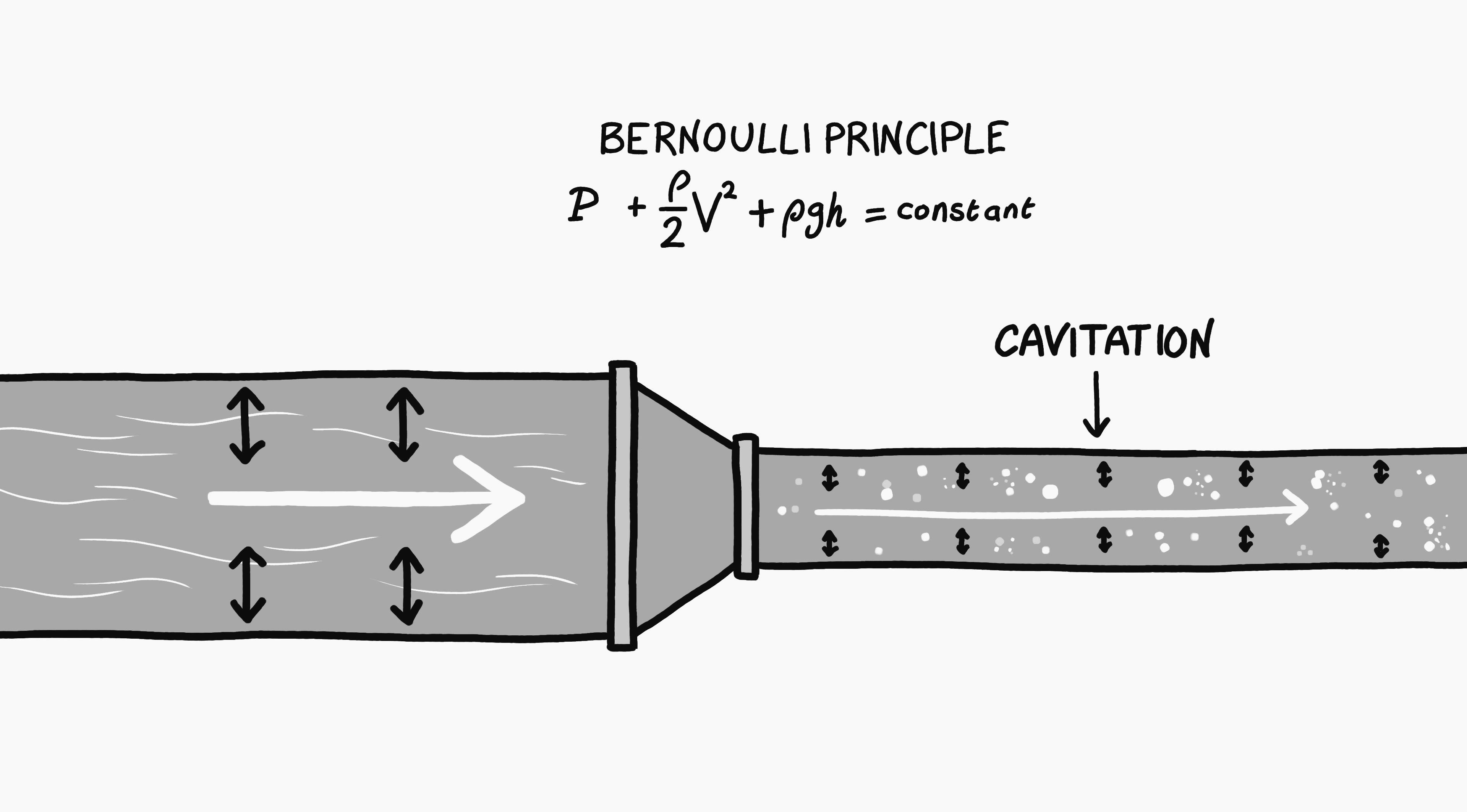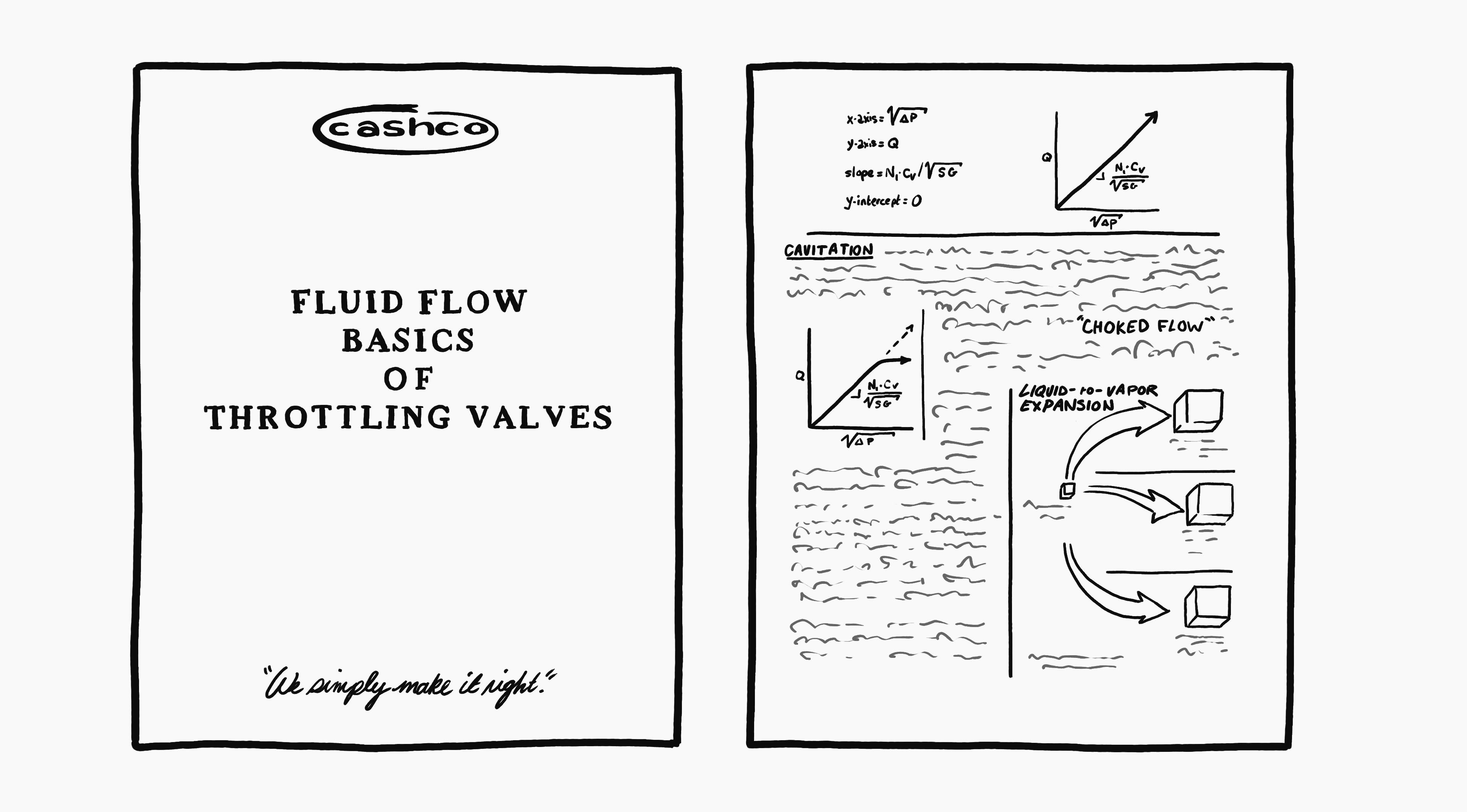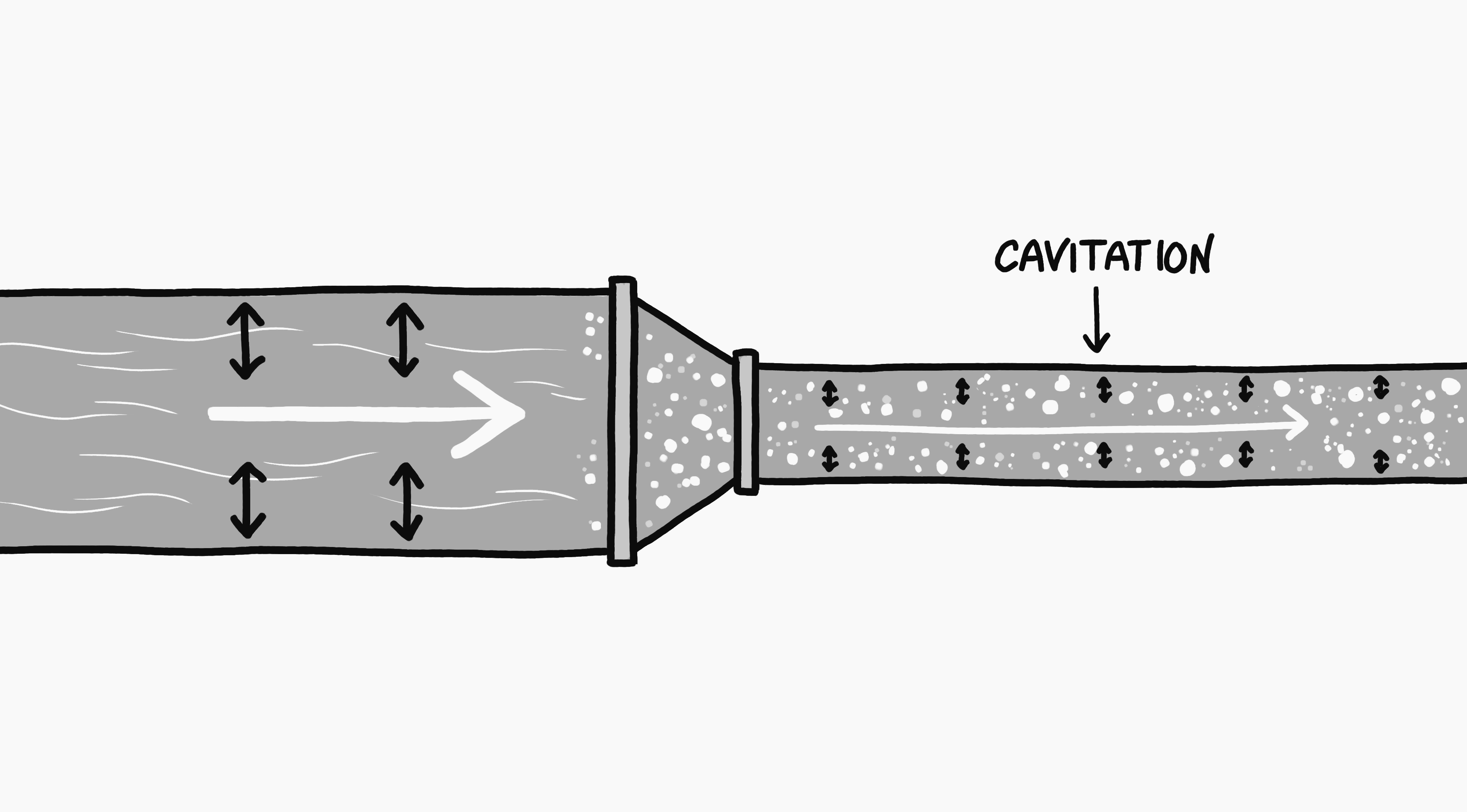Increasing the pressure to try to push the water through harder surprisingly only makes it boil faster. Page 17 of this Fluid Flow Basics of Throttling Valves PDF has a detailed description. Cavitation limits the total flow of water making it through the opening. Though, the higher the pressure, the faster the water-steam mix will move because more of it will expand into vapor bubbles.